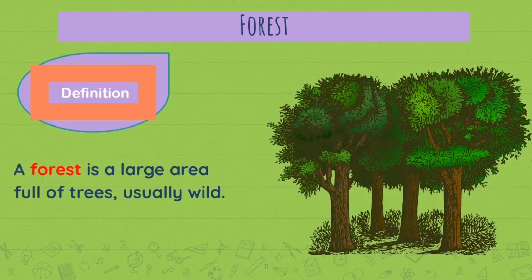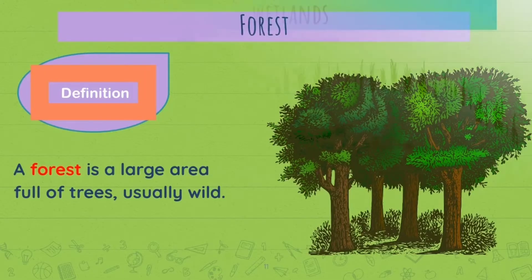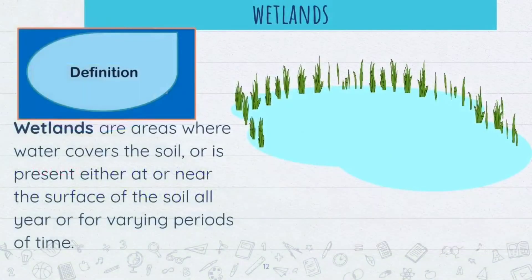Next, we have forest. A forest is a large area full of trees, usually wild — these are naturally occurring environments. Can you think of any forest here in Jamaica, in the Caribbean, and in the world?